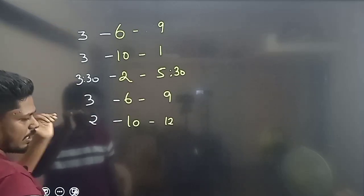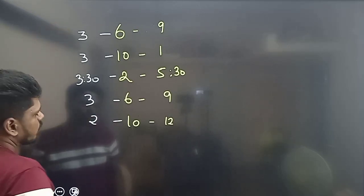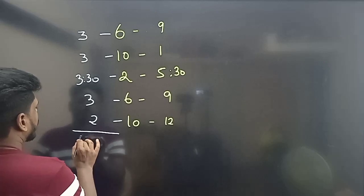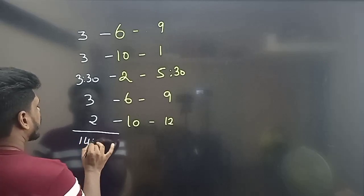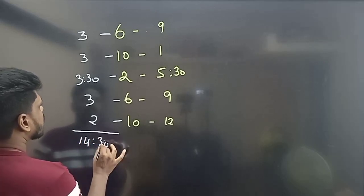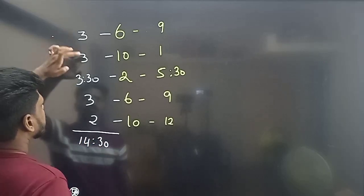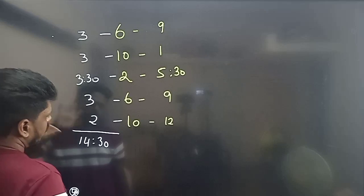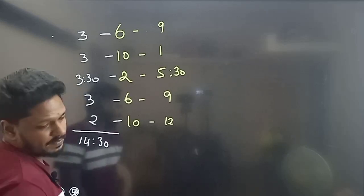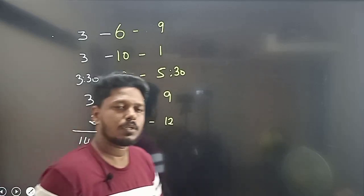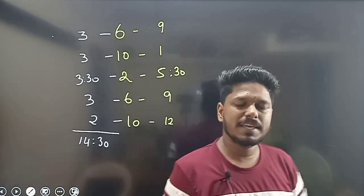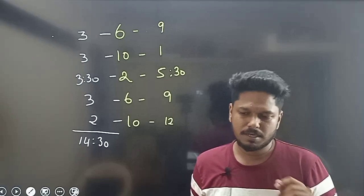So in total: 3 plus 3 plus 3 plus 3 plus 2 and a half — that comes to 14 and a half hours. So the total study time per day is 14 and a half hours. How do we utilize it?